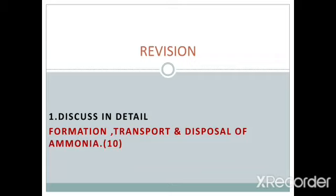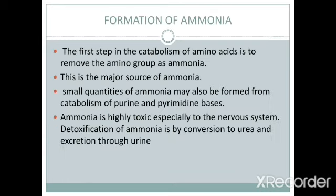We will discuss in detail the formation, transport, and disposal of ammonia. The first step in the catabolism of amino acids is to remove the amino group as ammonia, and this is the major source of ammonia. Small quantities of ammonia are also formed from the catabolism of purine and pyrimidine bases.